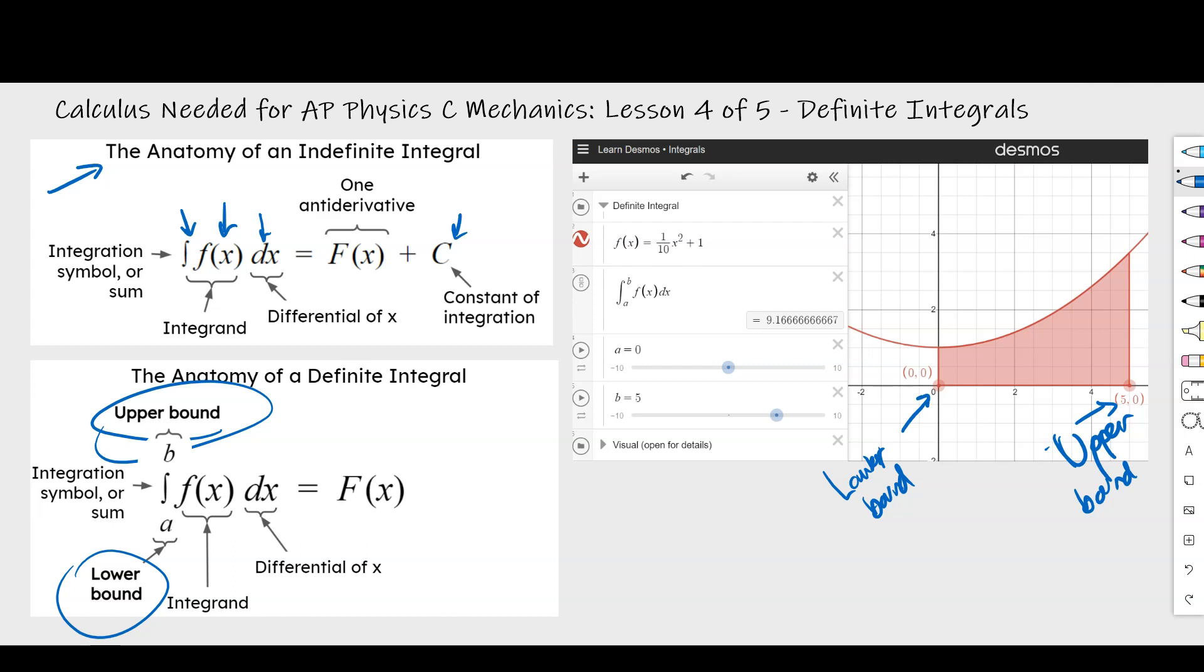So an example of this is if we're talking about time as our variable, we want to set typically time as zero as our lower bound, and then some upper bound at some higher value. Or it doesn't have to be zero. It could be, you know, time like a lower bound of 10 seconds and an upper bound of 20 seconds. It's really dependent on the problem.